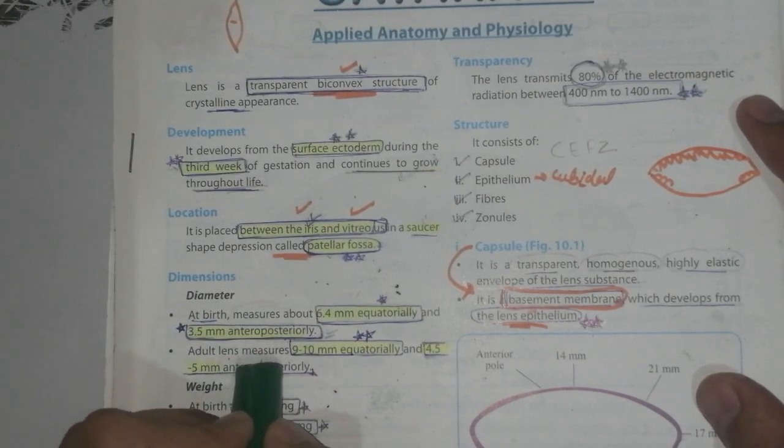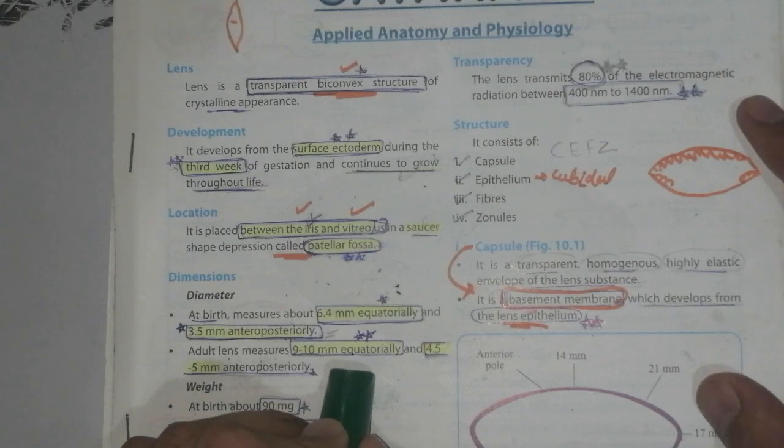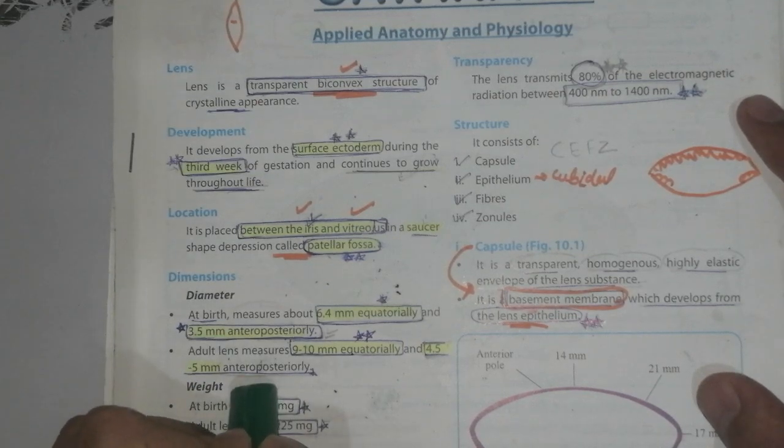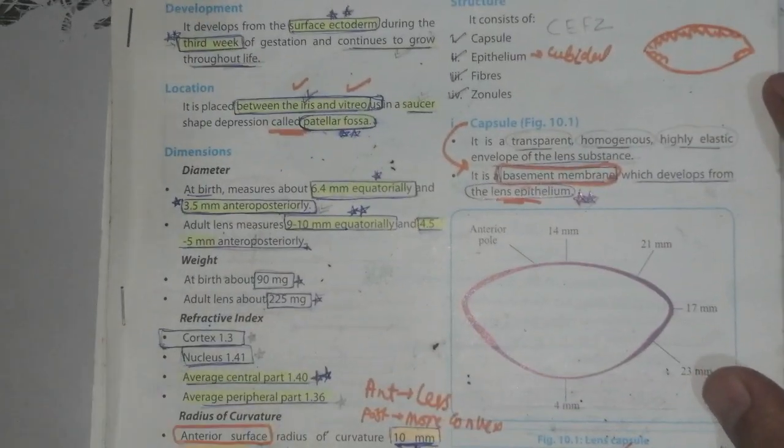Adult lens measures 9 to 10mm equatorially and 4 to 5mm anterior-posteriorly.